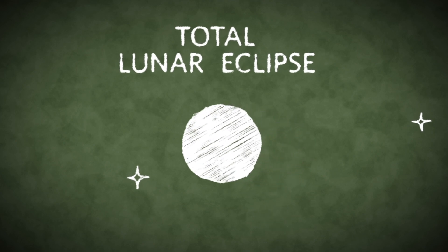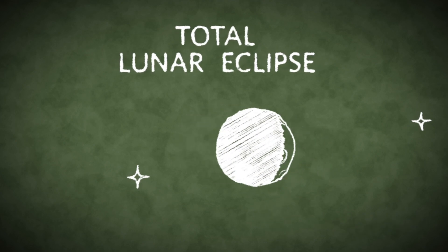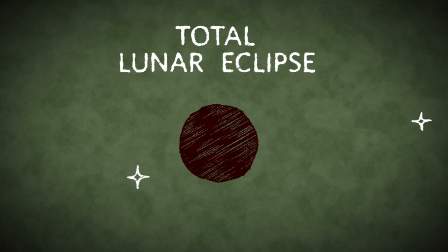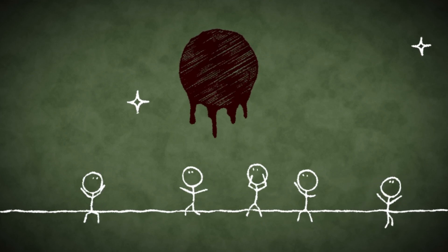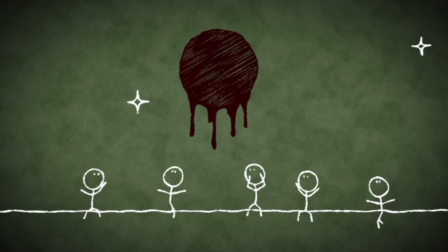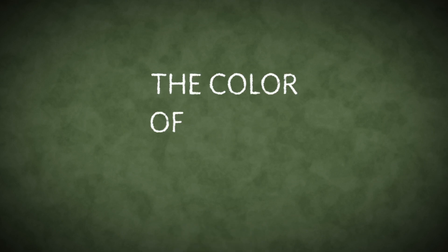Instead, it turns a coppery red color. It was this reddish color that made some ancient cultures think that the moon was bleeding, the result of an attack by some evil demon. Today we know why that color appears. It's the color of Earth's shadow.